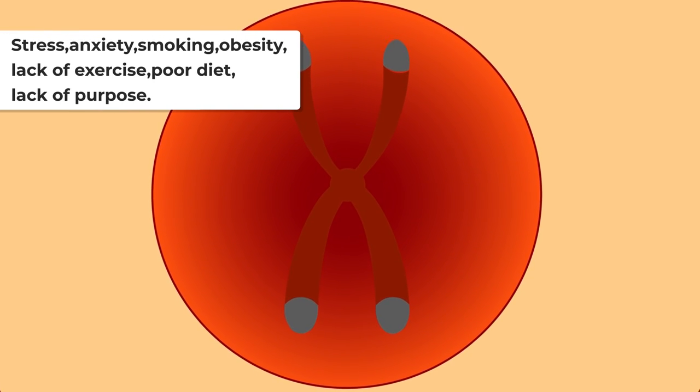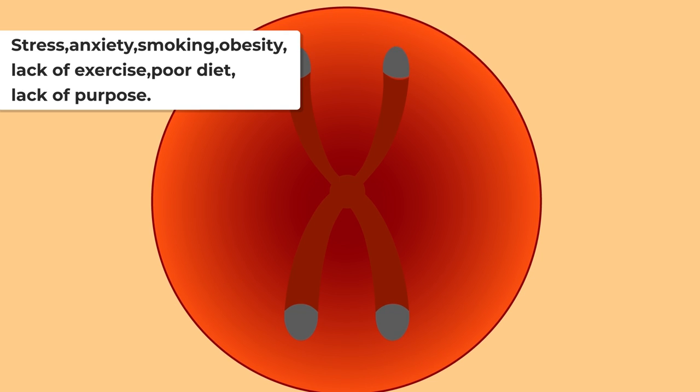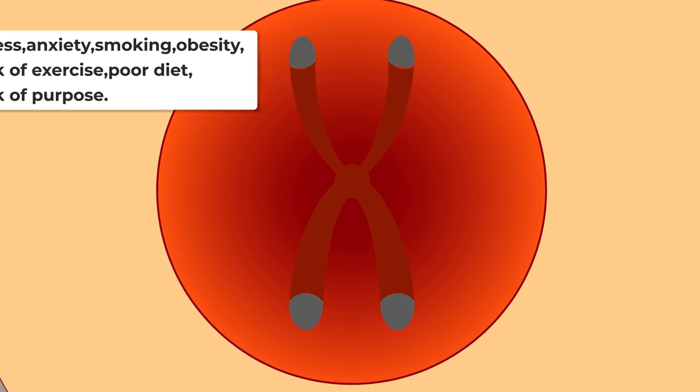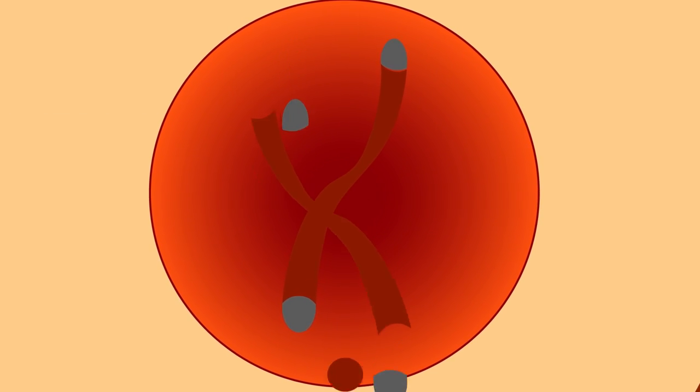Telomeres can also be shortened by stress, anxiety, smoking, obesity, lack of exercise, poor diet, and lack of purpose. When telomeres get too short, our cells can no longer reproduce, which causes our tissues to degenerate and eventually die.